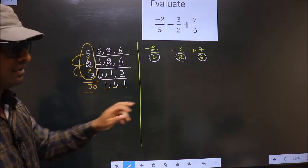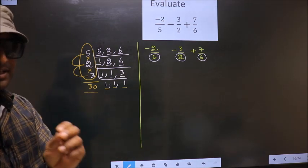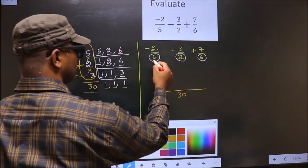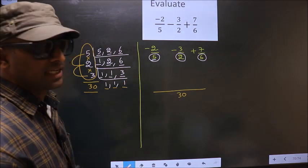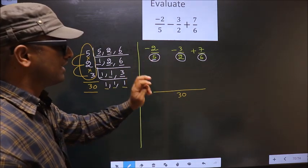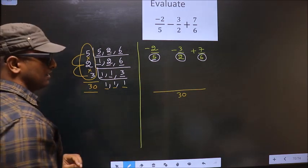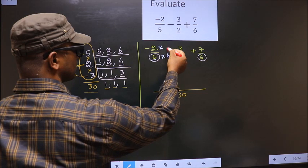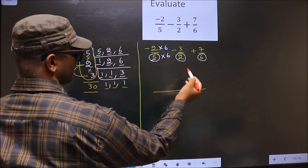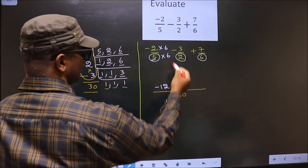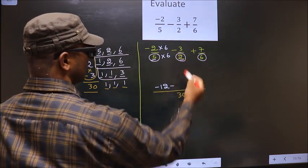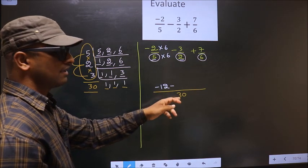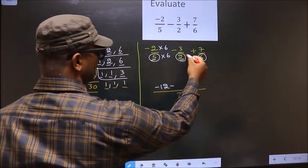Whatever LCM we got, we write it here as the common denominator, which is 30. Here we have 5 in the denominator and here we have 30. Now 5 should change to 30, so we multiply by 6. Whatever number we are multiplying in the denominator, we multiply by the same number in the numerator. So negative 2 times 6 gives negative 12. Next, here we have 2 in the denominator and 30 as the LCM. Now 2 should change to 30, so we multiply by 15.